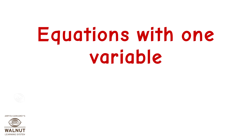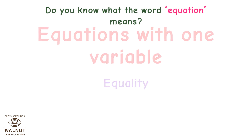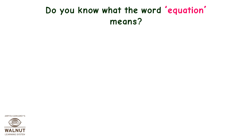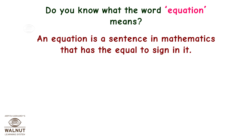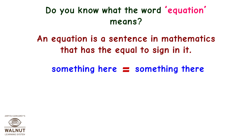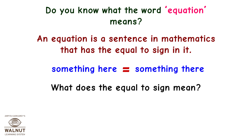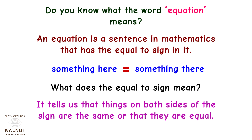Equations with one variable. Do you know what the word equation means? An equation is a sentence in mathematics that has the equal to sign in it. Something here is equal to something there. The equal to sign tells us that things on both sides of the sign are the same or that they are equal.